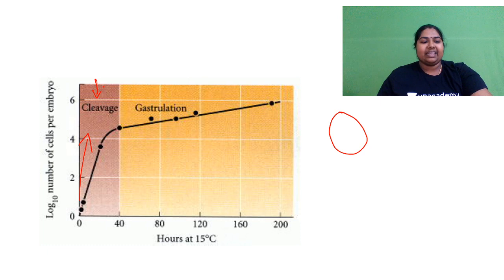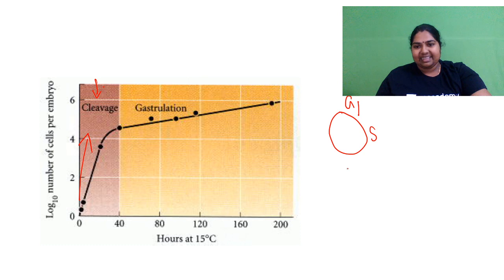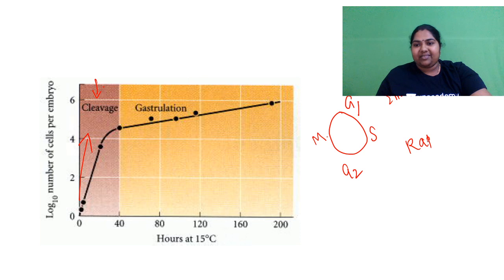What are the four phases? G1, G2, and M. But now what has happened during embryonic development? You need a rapid cleavage. So if there is a need for rapid cleavage again and again, all your cells cannot simply go through all four phases.